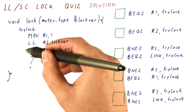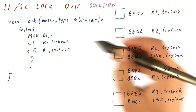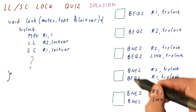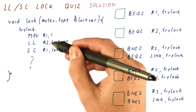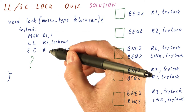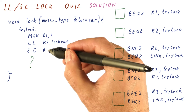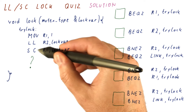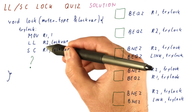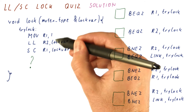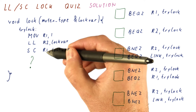The second thing we need to check is: if we found the lock available, meaning we are past this point, we need to check whether we successfully stored a one without somebody else beating us to it. We successfully store a one if R1 after the store conditional has a value of one. We fail to store successfully if R1 is equal to zero, meaning this is the correct solution.